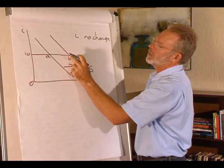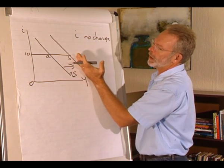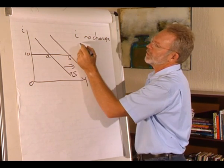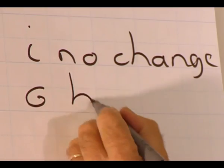Government spending was higher. That has led to the rightward shift of the IS curve. So government spending is higher.